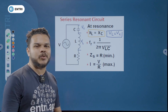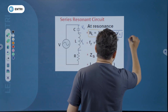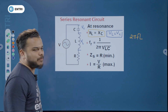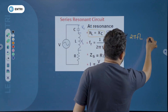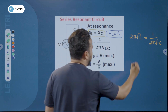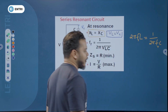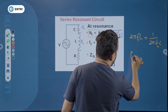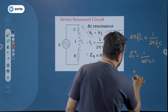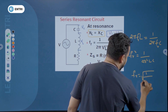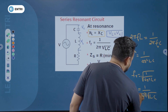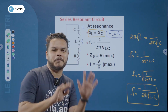What is the resonating frequency? Setting XL equal to XC: 2πfL equals 1 by 2πfC. Solving, f_R squared equals 1 by 4π²LC. Taking the square root, f_R equals 1 by 2π√(LC). This is the resonating frequency equation.